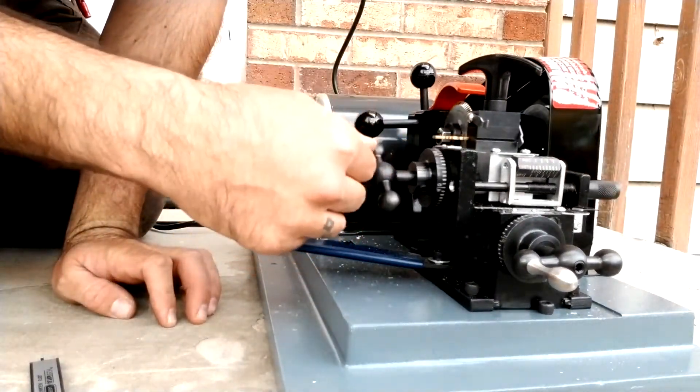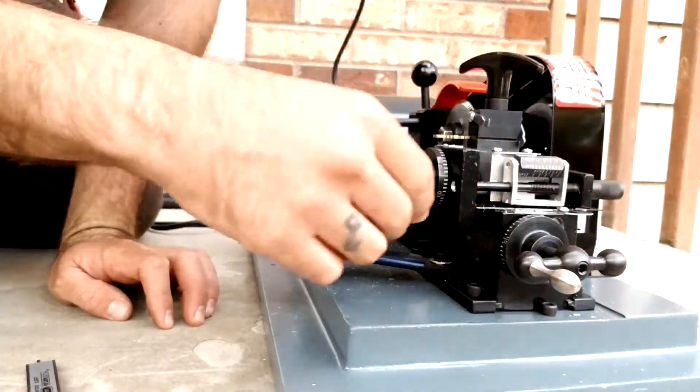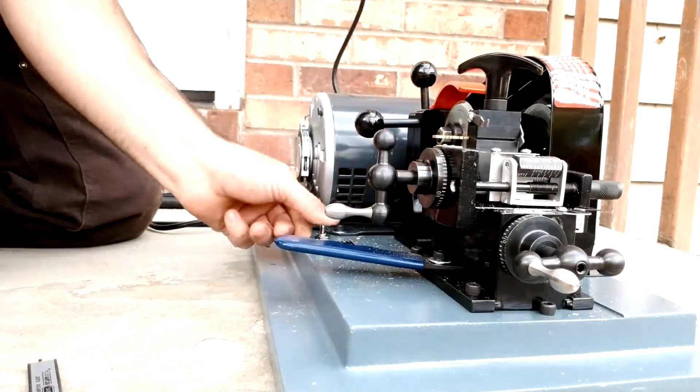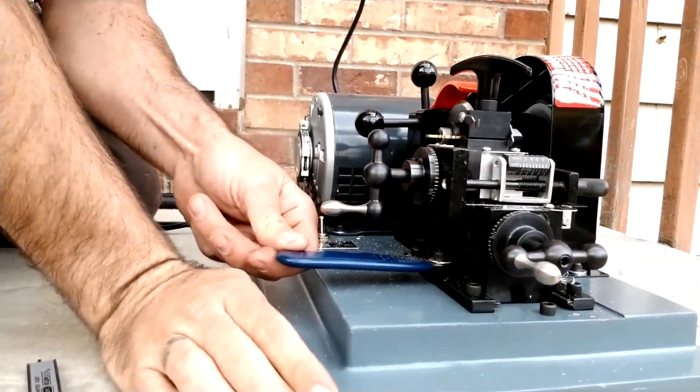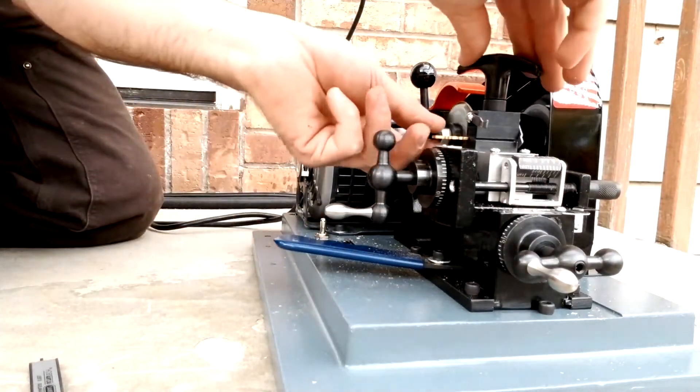I'm gonna move this over, dial is gonna be set back to that 20. I'm gonna turn the machine on, make sure that it's set. Turn the machine on, that number four spacing, machine off.